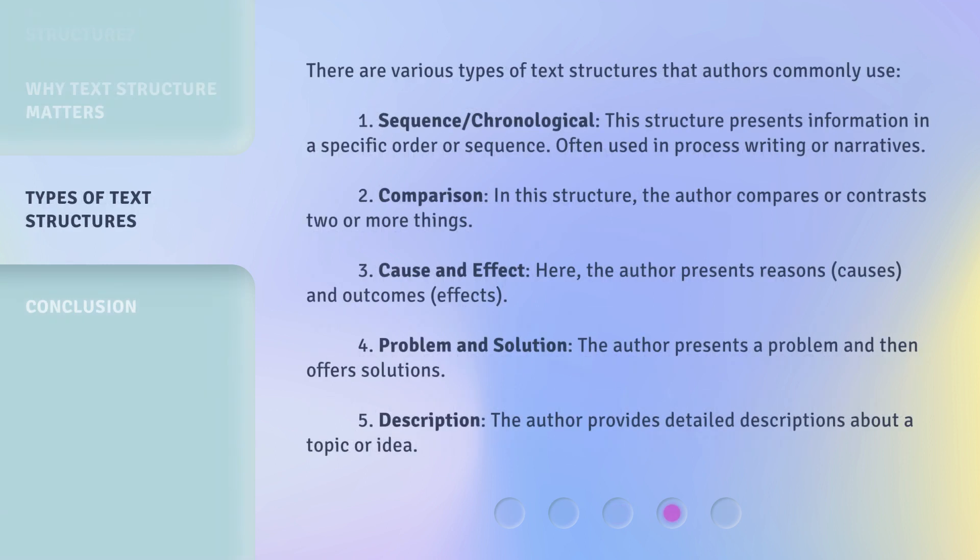There are various types of text structures that authors commonly use. First, Sequence or Chronological: this structure presents information in a specific order or sequence, often used in process writing or narratives.